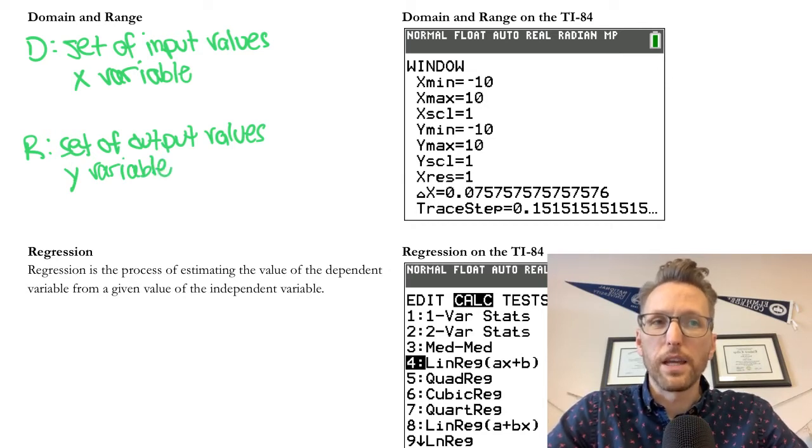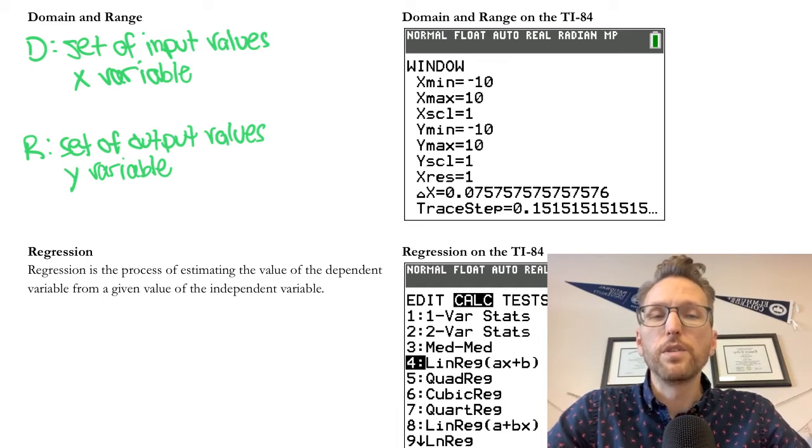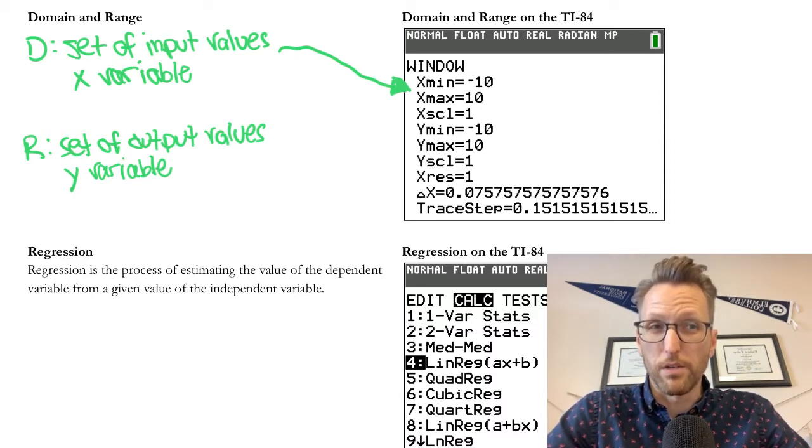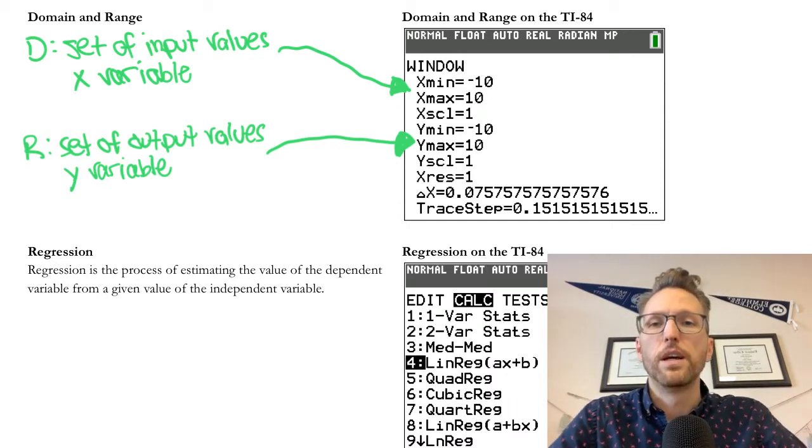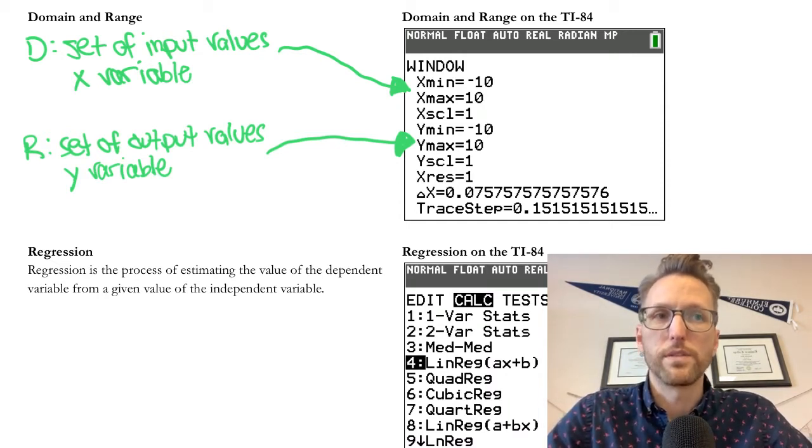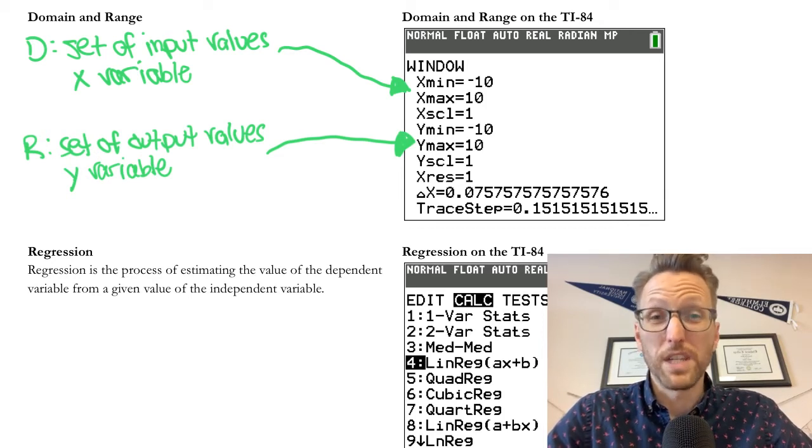Now on the calculator, as you could see to the right, the way that we can make sure that our linear function or some sort of model includes the domain and range in the visual, we could press the window button and change the window. So this is our default window that we've used before as well. Or you could change the x values and the y values. So for example, let's say we had an x value in our domain that was, say, negative 15. So we would go to that x min and change it to maybe negative 20 so that we could see that value.